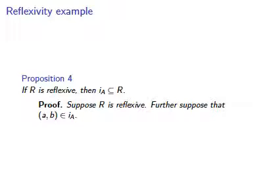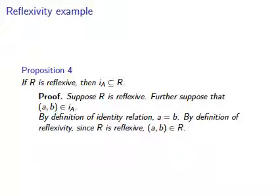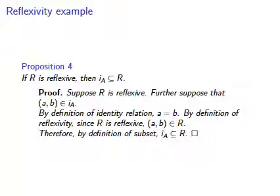The identity relation is simply that relation where everything is related to itself. If a is related to b in the identity relation, then a must be the same thing as b. But everything is related to itself in a reflexive relation, so a must be related to b in the relation r. This is true because our supposition is that r is reflexive. That's enough to show subset.